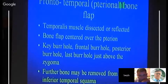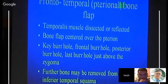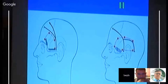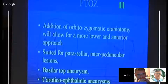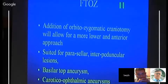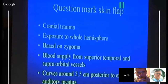For the frontotemporal bone flap, the temporalis muscle is dissected or reflected, and the bone flap is centered over the pterion key burr hole. A frontal burr hole is used, and posterior burr holes are usually required in older patients where the dura is more adherent. The last burr hole is placed just above the zygoma. Further bone may be removed from the inferior temporal squama to improve vision. The dural flap is based on the orbit. Frontal orbital zygomatic craniotomies can provide a very extended approach with a more inferior trajectory, suited for cavernous sinus, interpeduncular region, basilar tip aneurysms, and ophthalmic artery aneurysms.